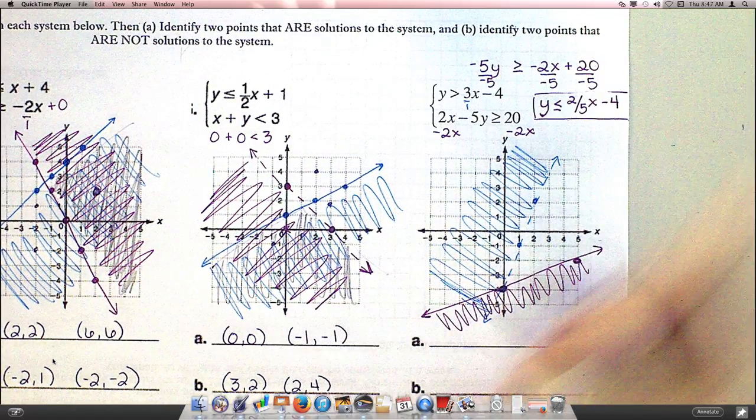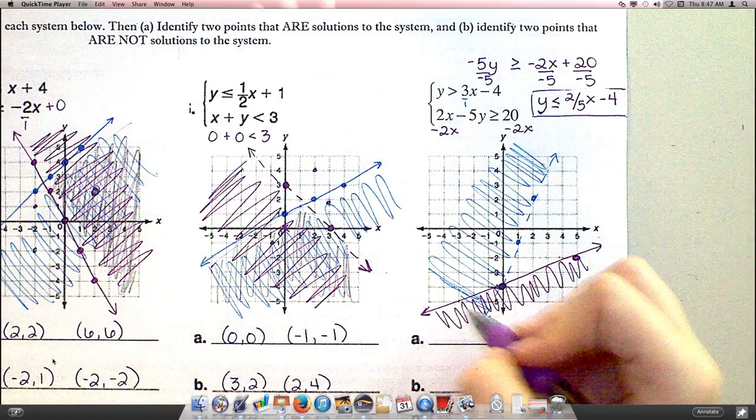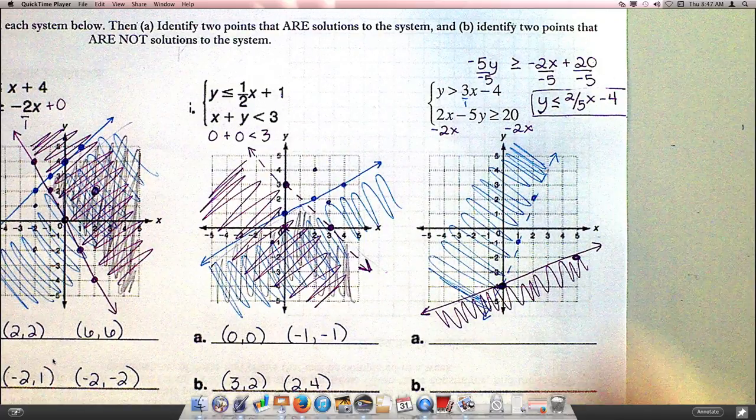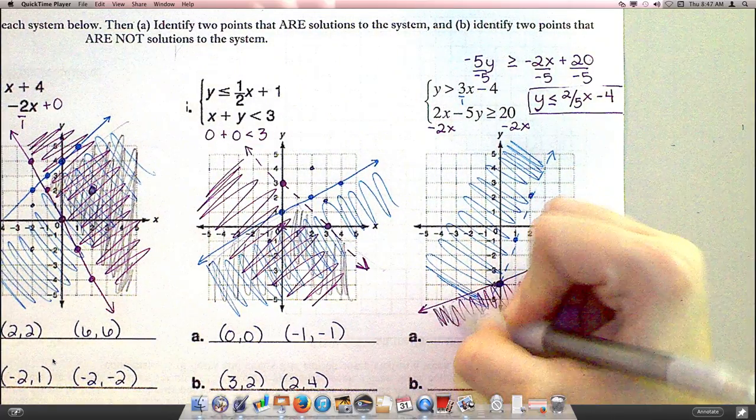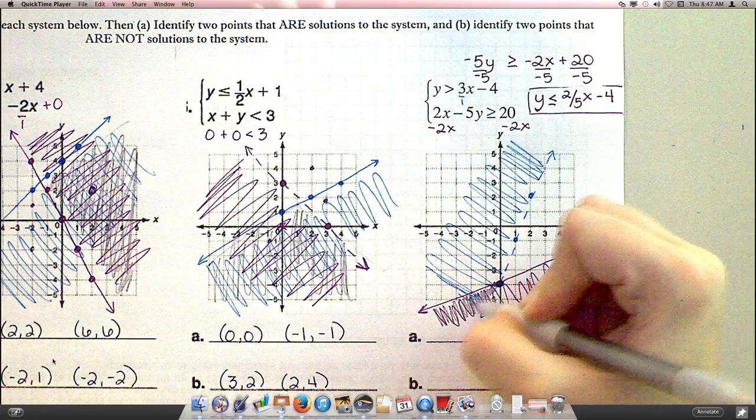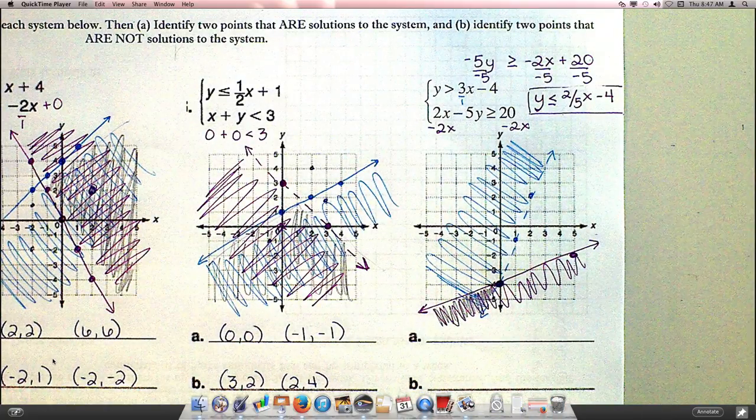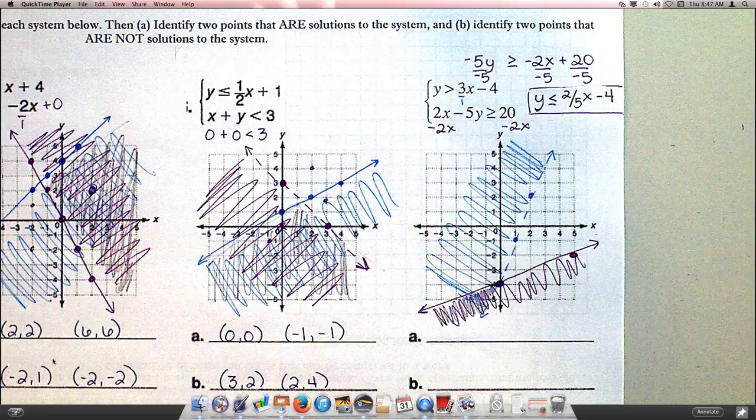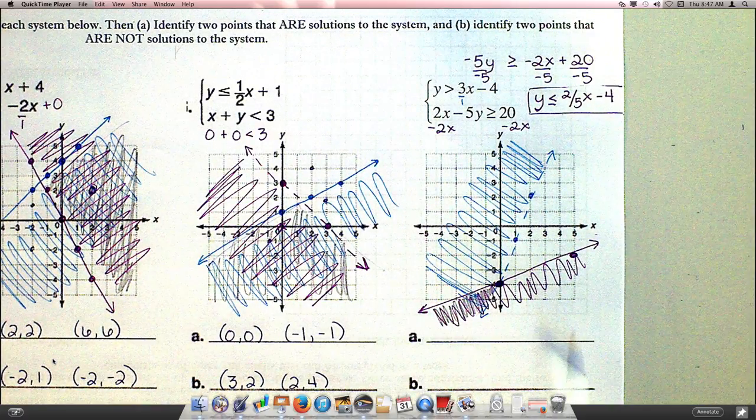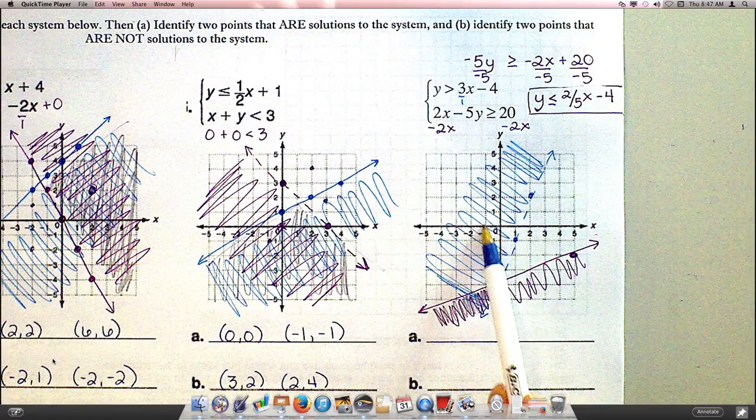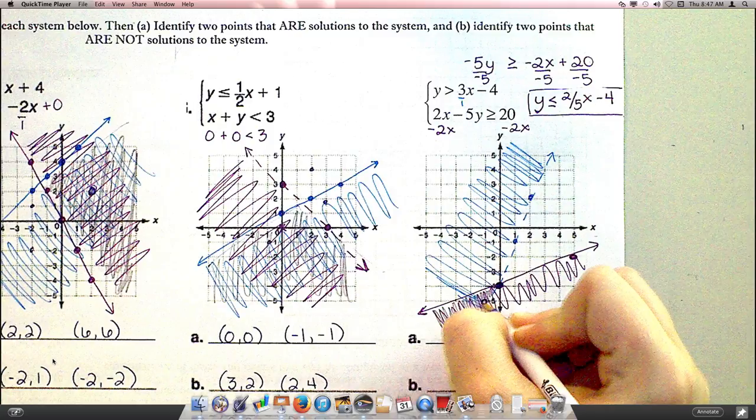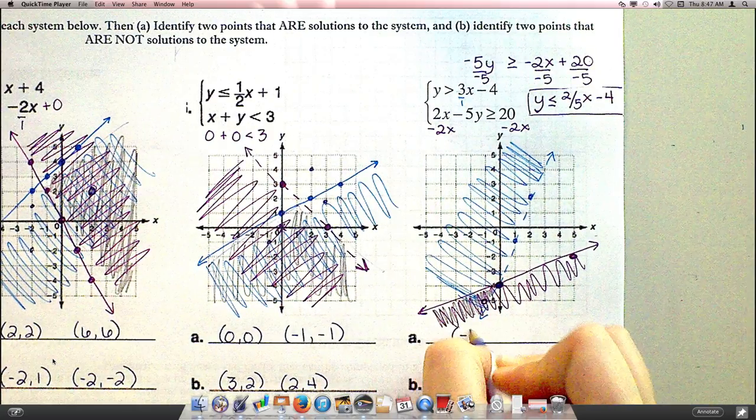So on this graph, you've got a pretty small chunk that is your overlap. Now remember that graph keeps going. So if we had drawn this as a graph that went all the way to 10, that overlap section would look a little bigger. But as it is now, what's something that's included in the solution? 1, 5. Negative 1, negative 5. Yep, right here would work.